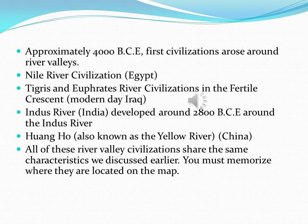Approximately 4,000 BCE, first civilizations emerged around river valleys. Nile River Civilization in Egypt. Tigris and Euphrates River Civilizations in the Fertile Crescent — modern day Iraq. Indus River Civilization in India. Huang He River Civilization in China. All these river valley civilizations share the same characteristics we discussed earlier. You must memorize where they are located on the map, and you can use this basic information to answer questions about any of those river valleys.